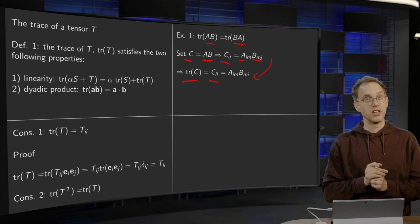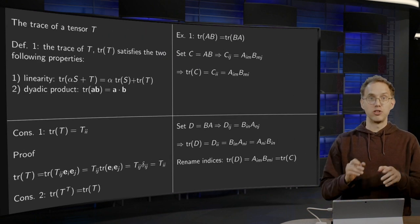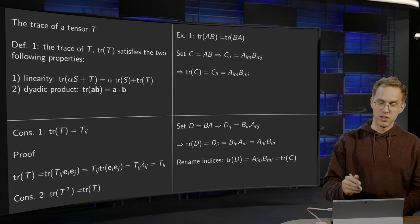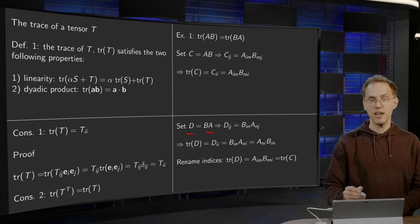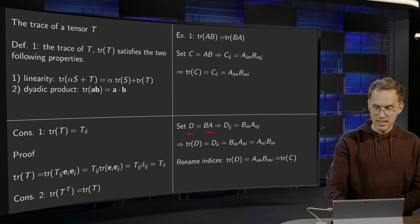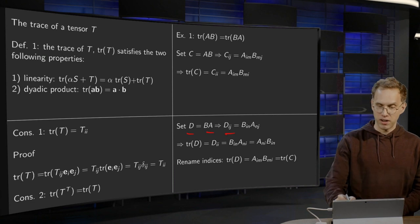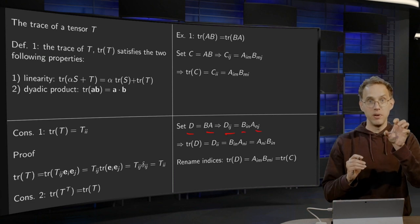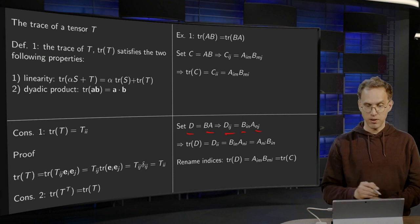Now we're going to do the same trick for D equals B times A. And we have to show, of course, that those two are equal. So now we set D equals B times A, so our Dij, our elements, are given by the matrix product B times A, so Bin times Anj over here.